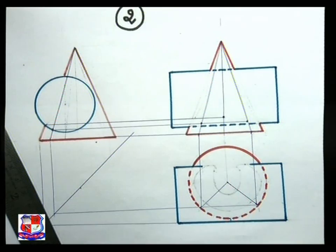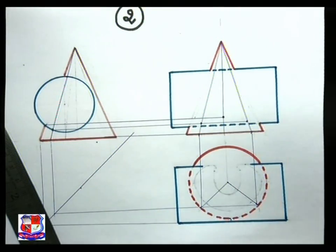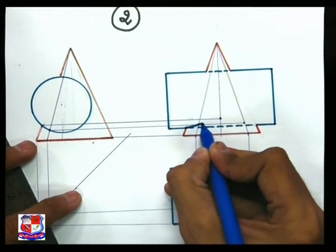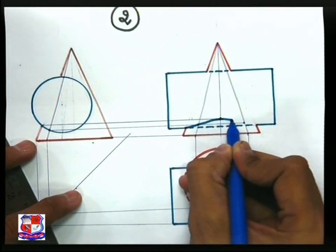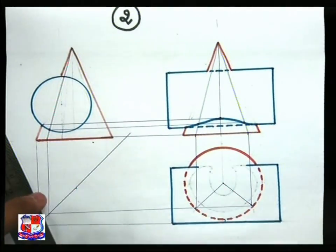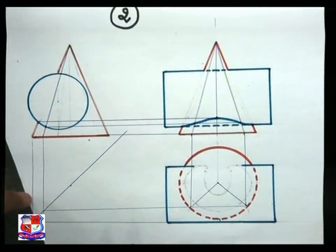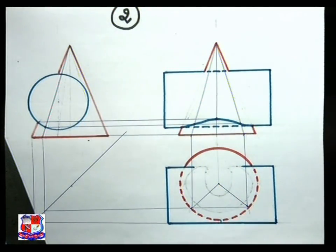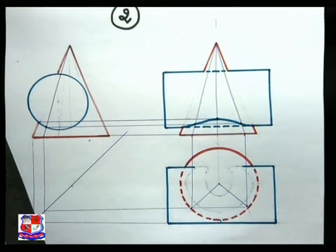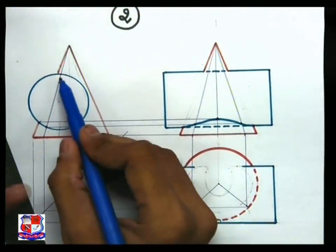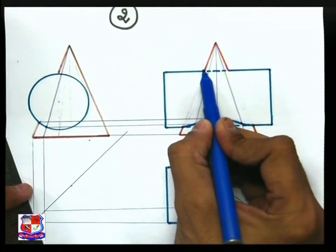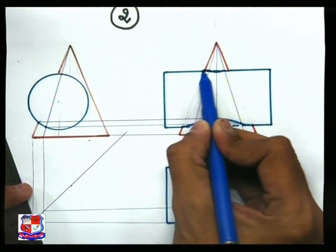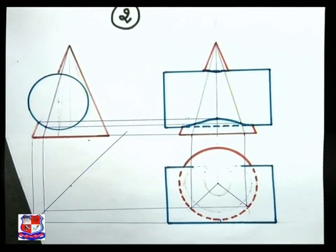Now join all these points with a smooth curve. That smooth curve would appear like this. So this is the shape which is visible in the front view for the intersection. Similarly in the top view also, here one point would be there - it would be very small - and here would be its front view.